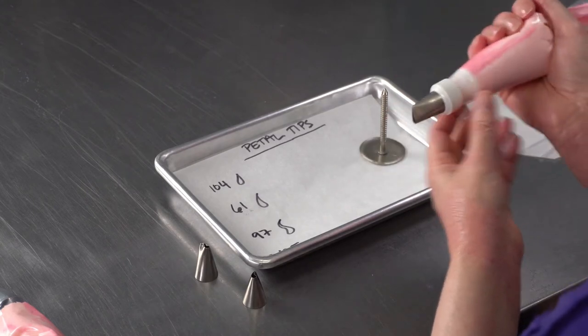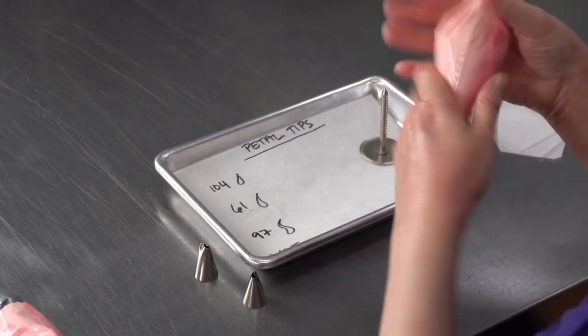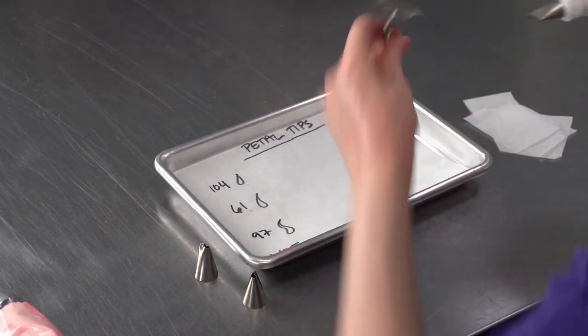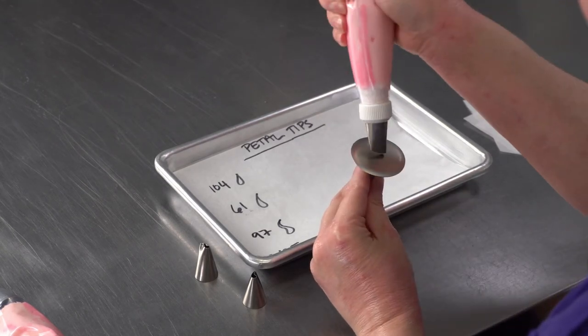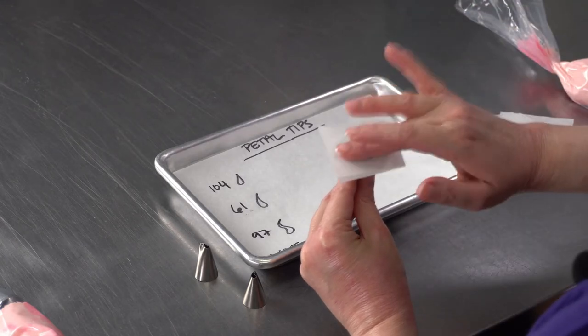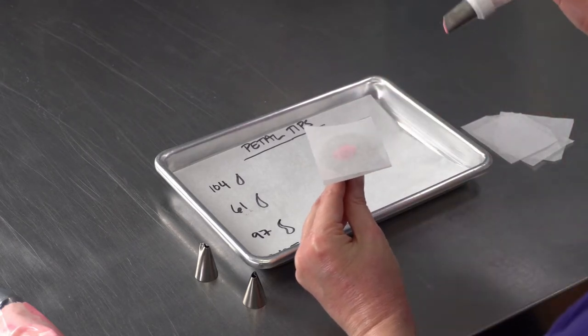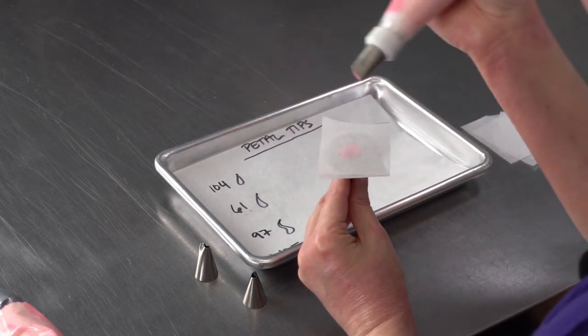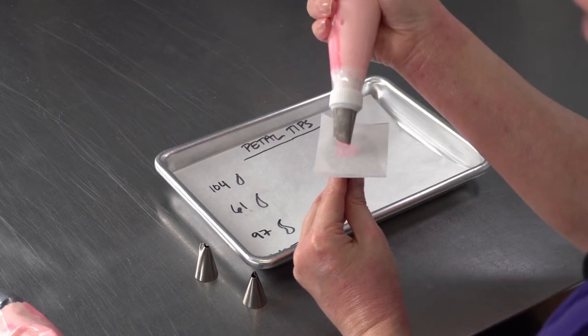So let's talk about these tips. There's a couple of different ways that you can make flowers, and we always want to use a little piece of parchment paper so we can put them down.